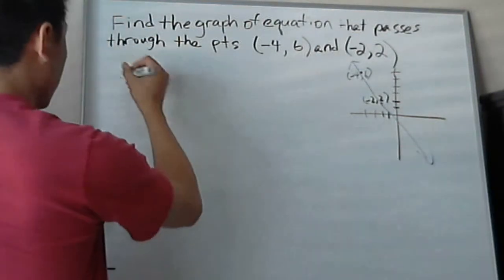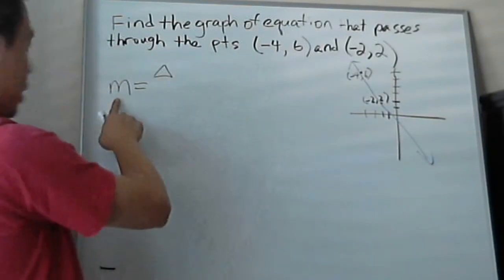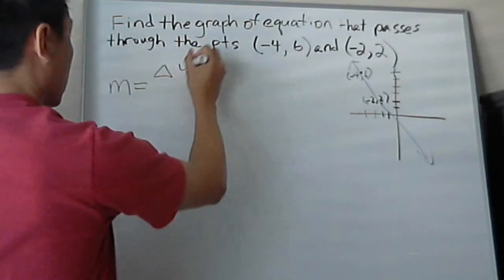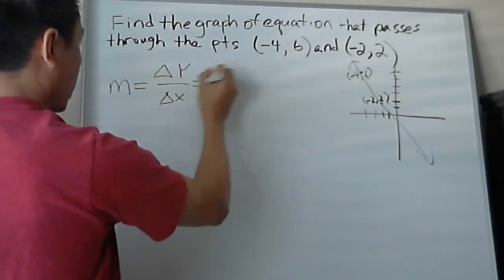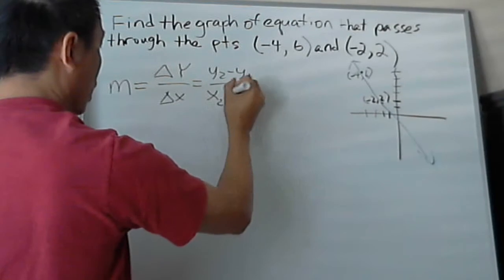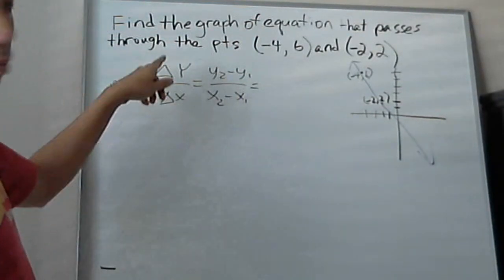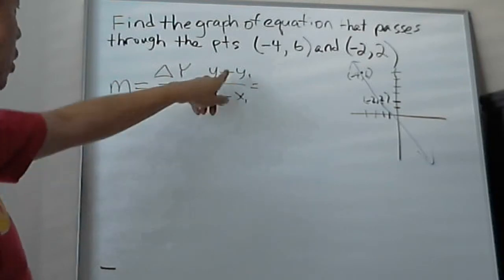So the first thing you do is remember the equation: m, which is slope always in algebra, delta y over delta x, which is equal to y2 minus y1 over x2 minus x1. So change in y, rise over run, change in y over change in x.